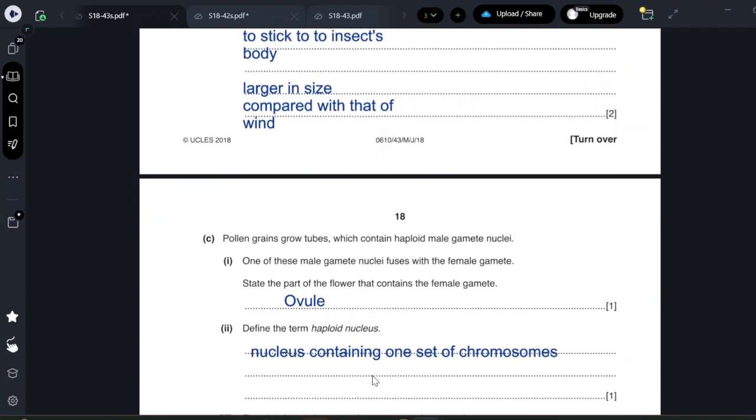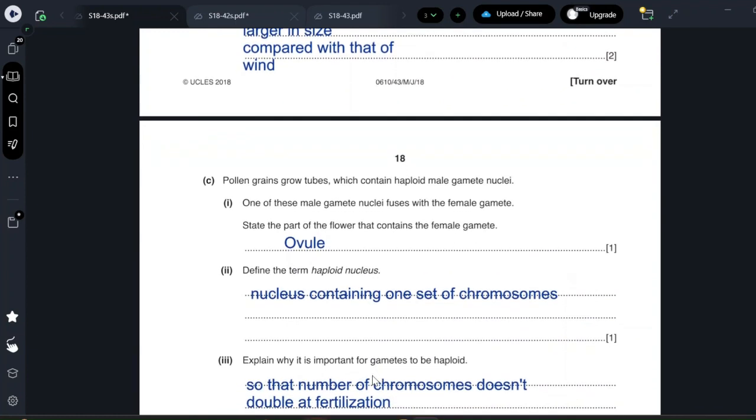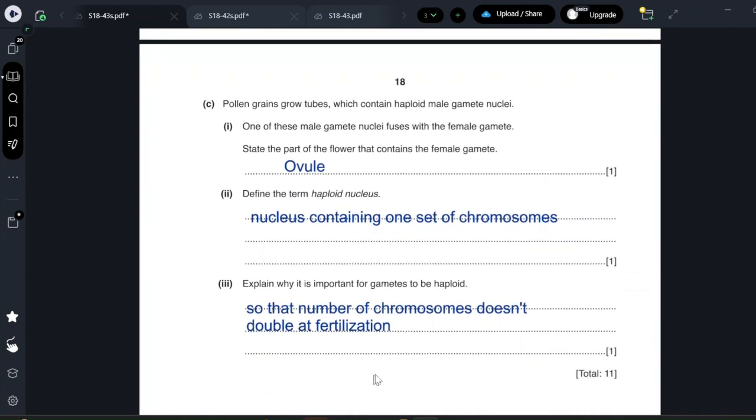Why is it important for the gametes to be haploid? So that after fertilization the number of chromosomes isn't doubled. I want the number of chromosomes to return to the normal which is 46 chromosomes.